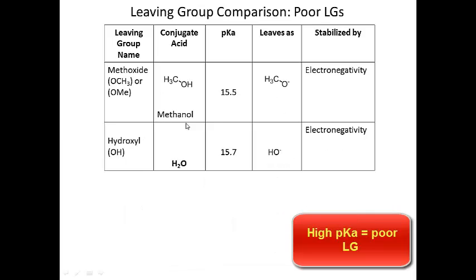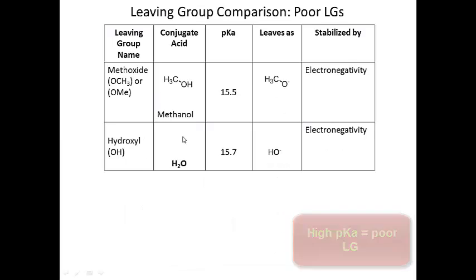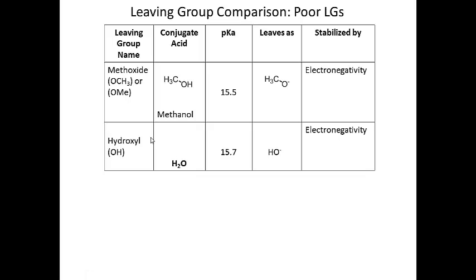These are really poor leaving groups. The methoxide anion is a poor leaving group compared to acetate, tosylate, or triflate. The hydroxyl group is also a poor leaving group — most of the time it needs to be converted into something else. You have to add something to the hydroxyl group to make it a better leaving group: sometimes it's protonated, other times other functional groups are added to facilitate leaving. It does not readily leave on its own.